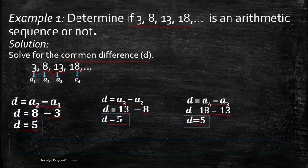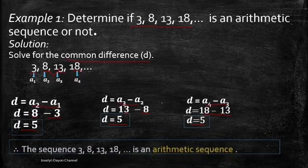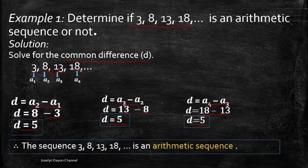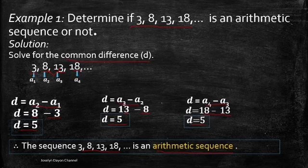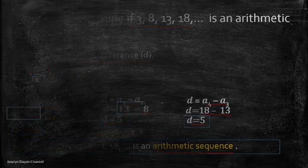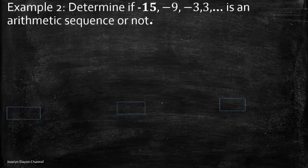As you have observed, the differences between two consecutive terms are equal. So we can say that the sequence 3, 8, 13, 18 is an arithmetic sequence.